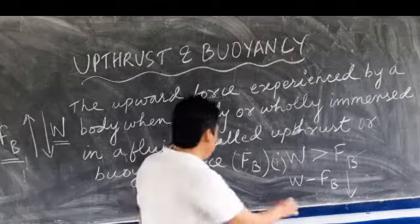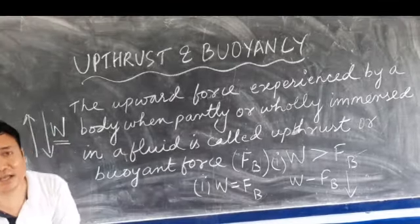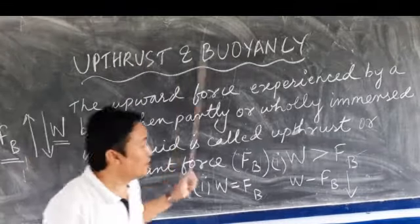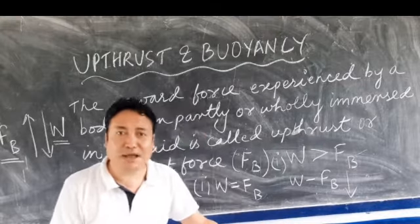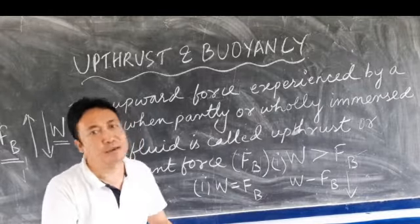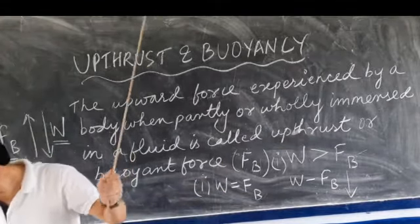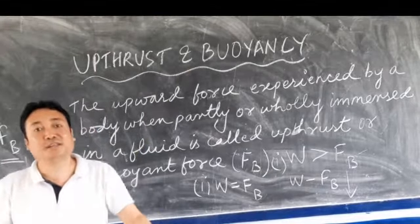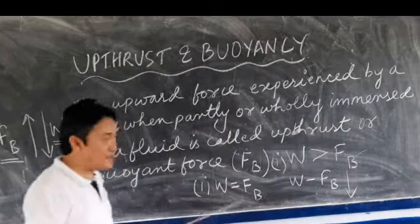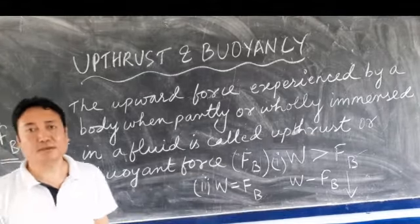The second condition: if W equals FB, meaning the weight of the body is equal to the buoyant force, then the resulting force becomes zero because both values are the same. When the resulting force is zero, the body remains floating on the liquid.